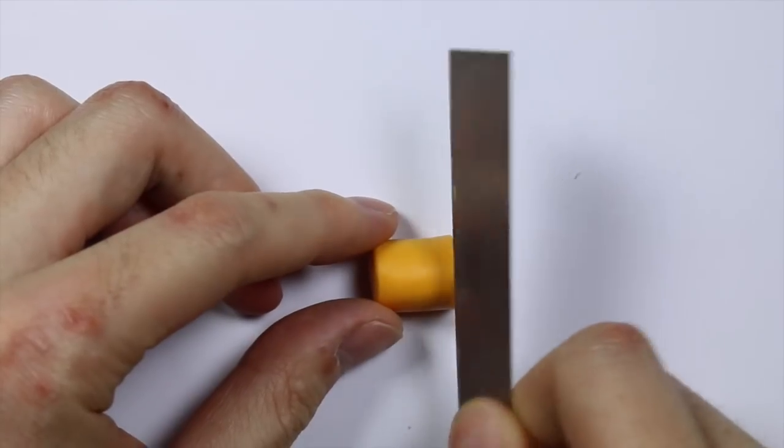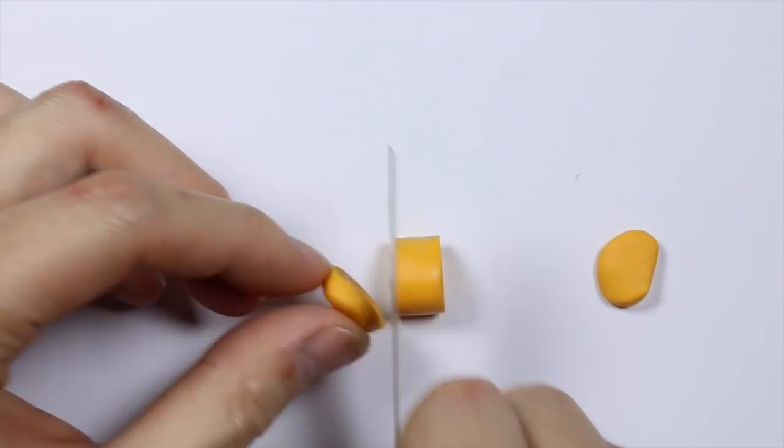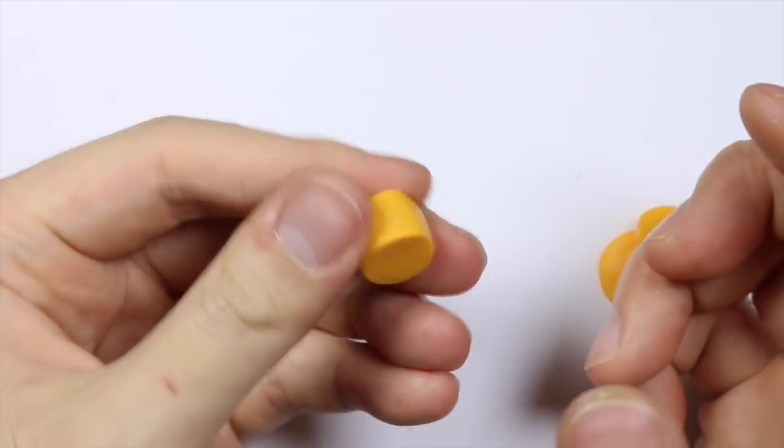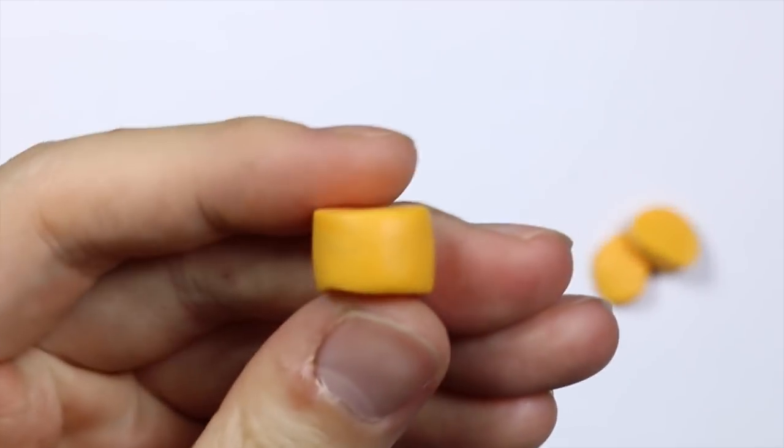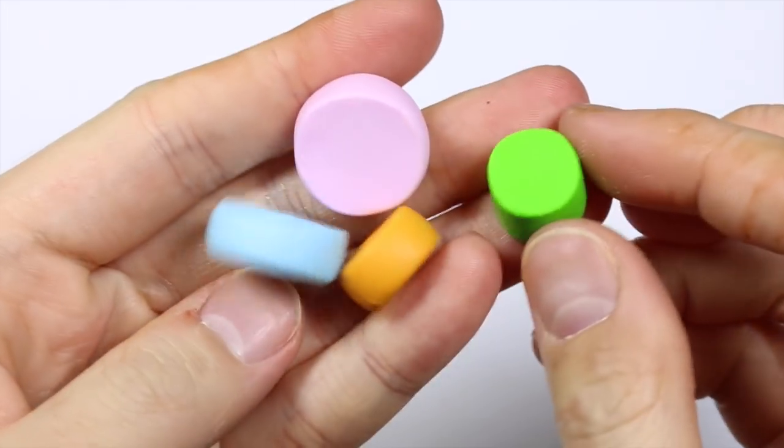To make the little planters for the succulents, I just took different colors of clay and I rolled them into fat cylinders and cut off the ends so it looks like pretty much a wheel of cheese. And here I have four different kinds, all baked according to instructions.